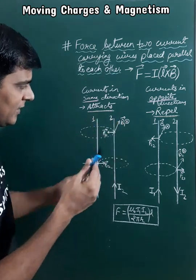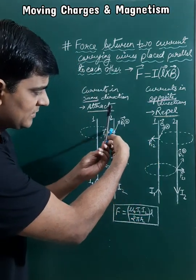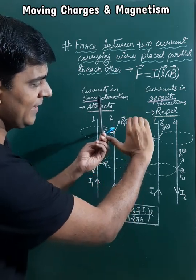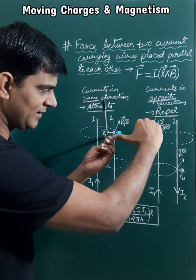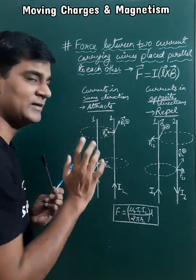Now if we find the direction of force here, then the length element is in upward direction, magnetic field is in inside or inward direction, so force will be found by L cross B. And L cross B, the thumb will be in the left hand side direction, so the force on second wire due to first wire will be in the left hand side.